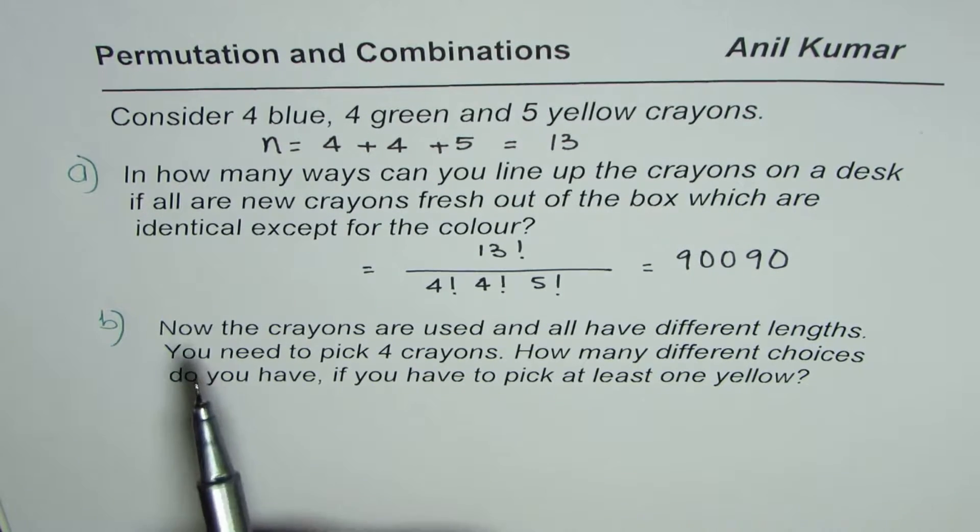Now in the second case, now the crayons are used and all have different lengths. You need to pick 4 crayons. How many different choices do you have if you have to pick at least one yellow? So that means one yellow and others from 8.